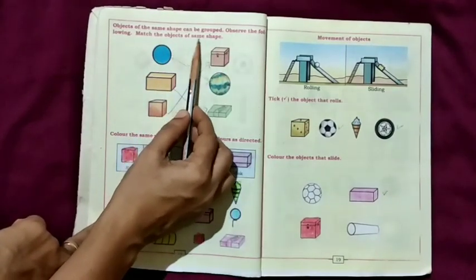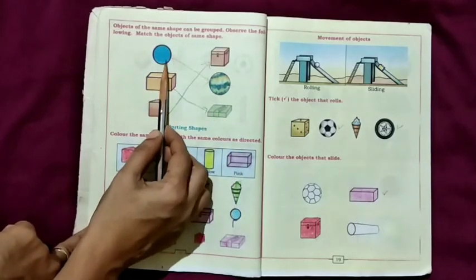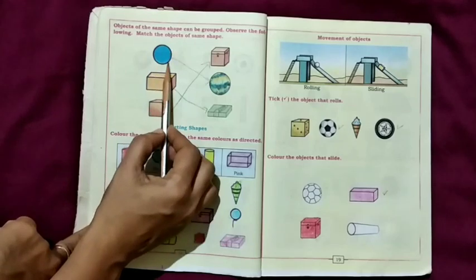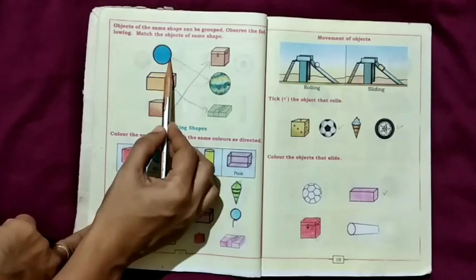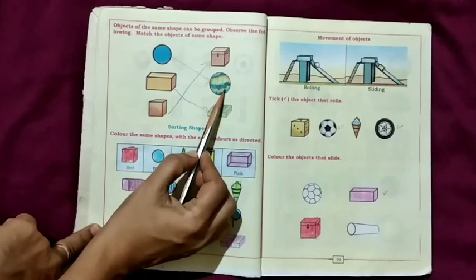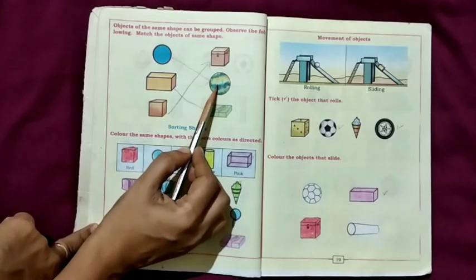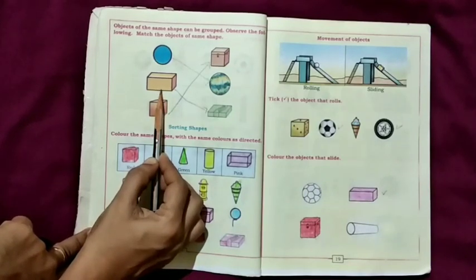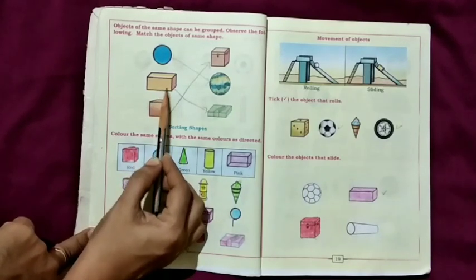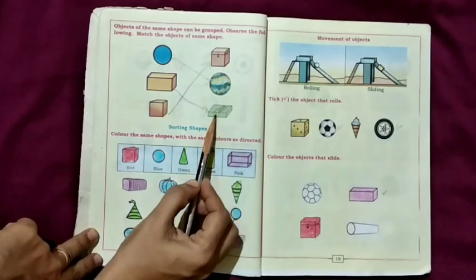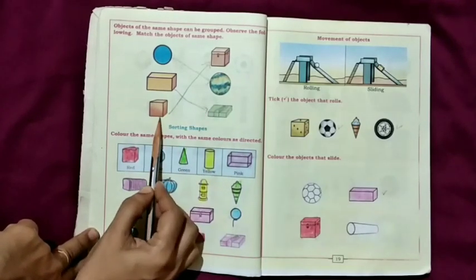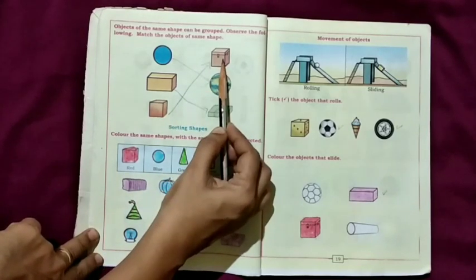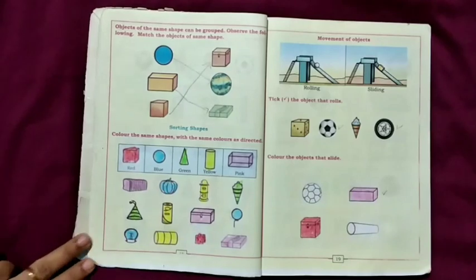Match the objects of the same shape. This is a circle, match with this sphere. What is this object? This is cuboid. Here, same like a cuboid shape is here. This is cube. This is also cube. So match this following.